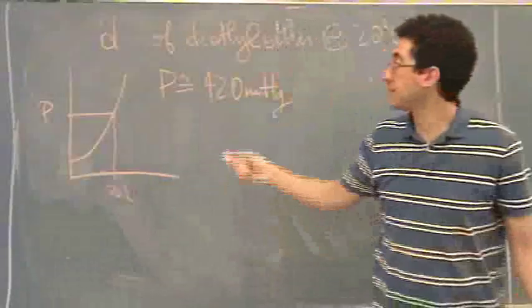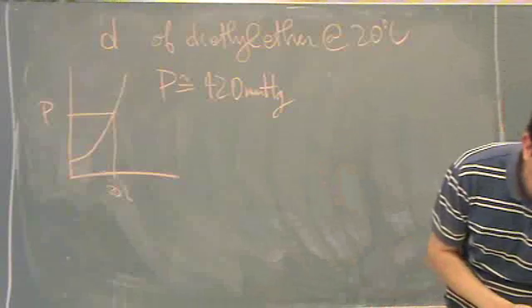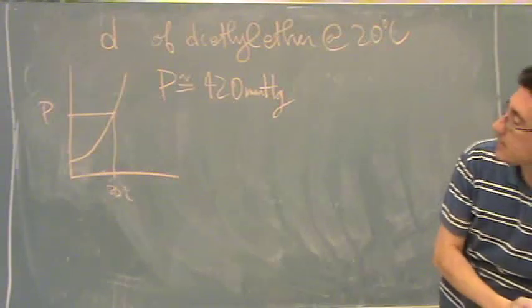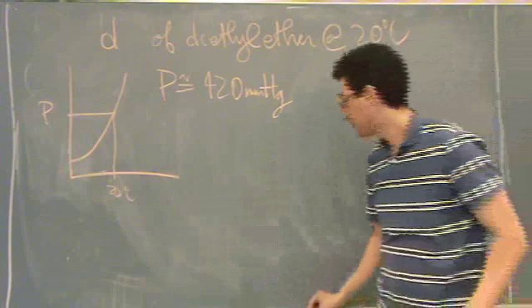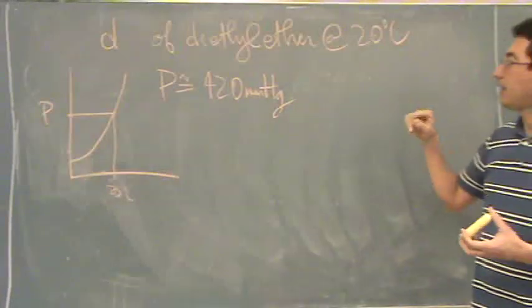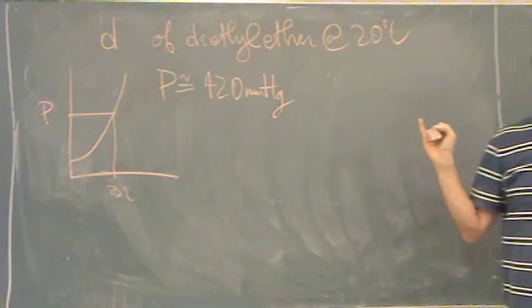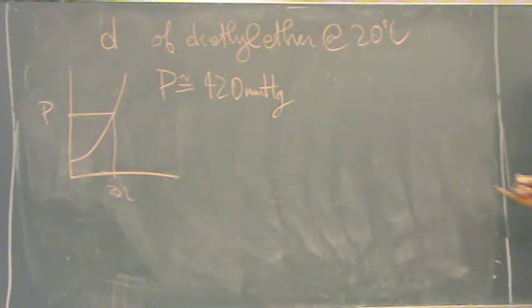So that's from the figure, not a table really, but a figure. And then what they want you to do is estimate the density. Okay, so we've got pressure and temperature. We want density. Does anybody know what formula direction we're going?